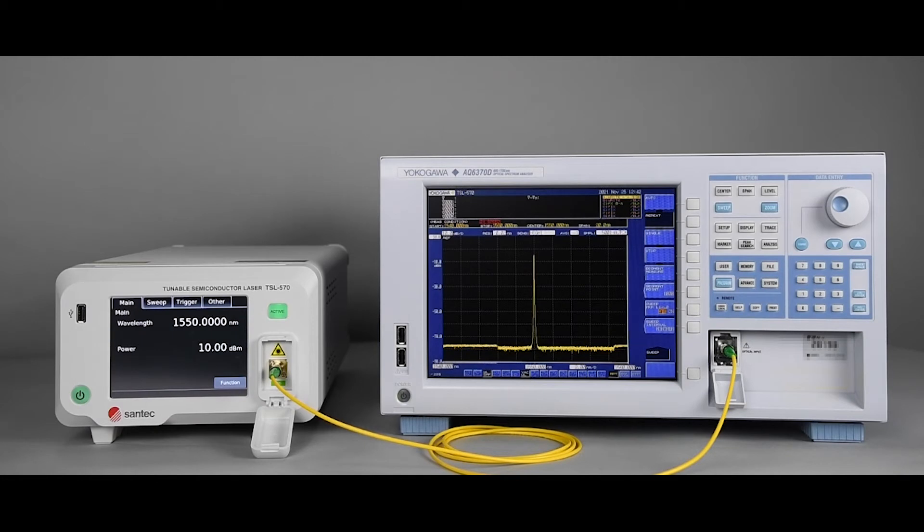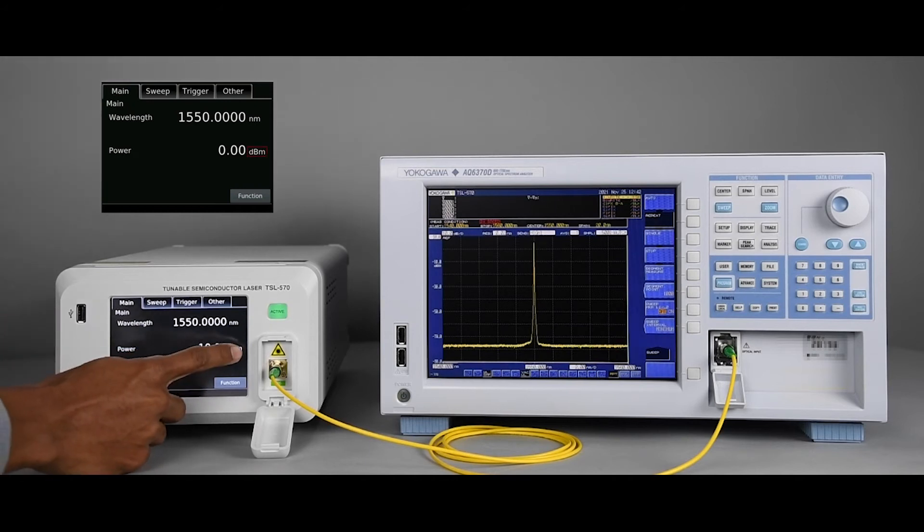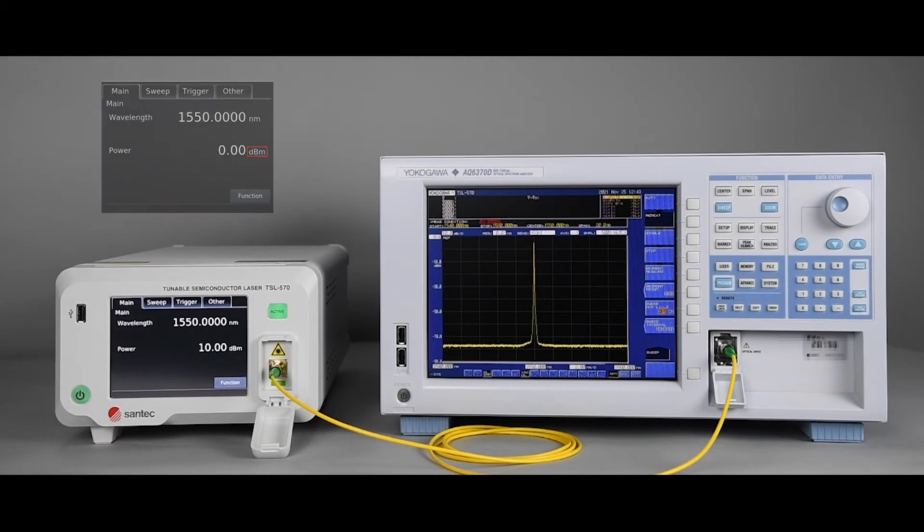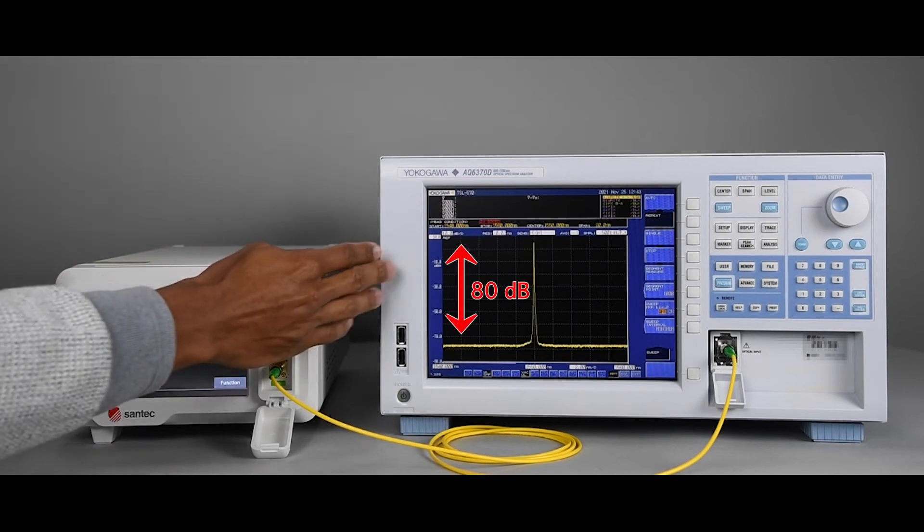Back on the main tab, the output power unit can also be switched between dB and mW simply by tapping on the power unit. The TSL combines high output power as well as a large signal-to-noise ratio of 80 dB.